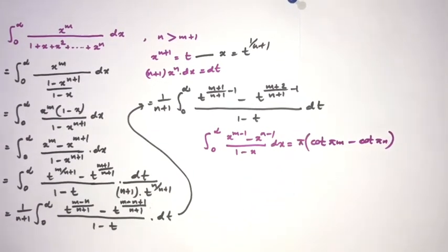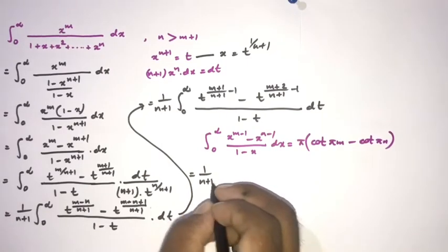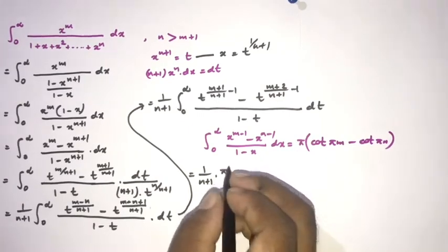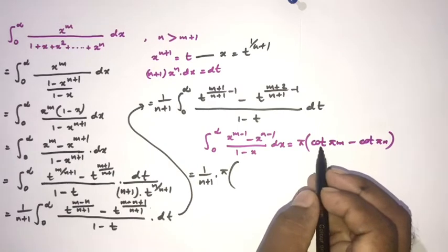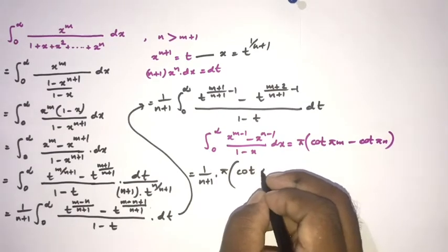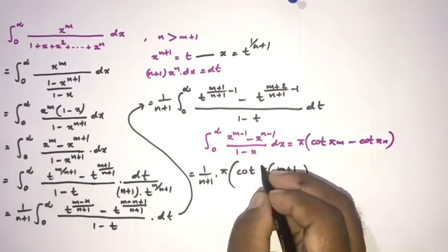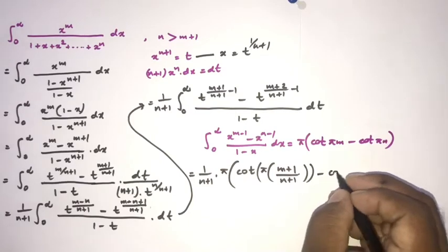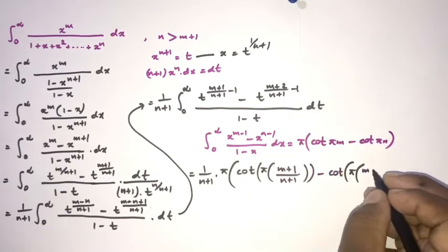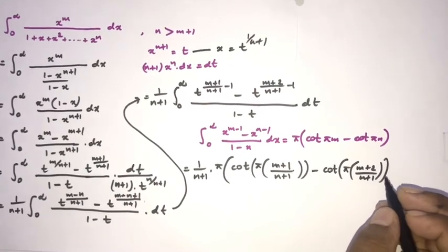Now we apply that integral formula. We get 1/(N+1) times pi times [cot(pi·(M+1)/(N+1)) minus cot(pi·(M+2)/(N+1))]. This is the answer for this general integral.